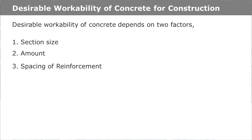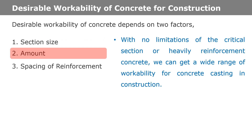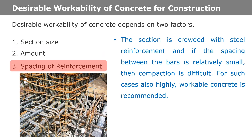Desirable workability of concrete depends on two factors. Based on the first factor, workability of concrete depends on section size, amount and spacing of reinforcement. For a narrow complicated section with several narrow corners and inaccessible parts, Highly Workable Concrete is recommended to obtain full compaction with sufficient effort. If the section is crowded with steel reinforcement and the spacing between bars is relatively small, compaction is difficult, and for such cases Highly Workable Concrete is also recommended.